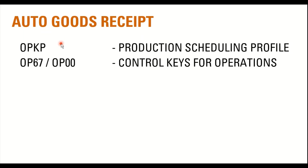For configuration, we can activate the auto GR in the production scheduling profile using T-code OPKP, under the production scheduling profile and plan combination. We can also assign the goods receipt functionality in the control keys for the operations. When looking at the routings of any material — finished product or semi-finished — we assign control keys in the routings for each operation, and we need to choose a control key that supports the auto goods receipt functionality.